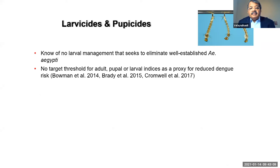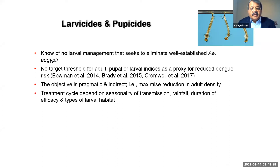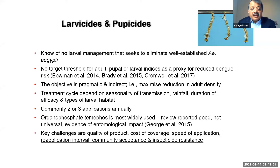For larval control, we must target both larvae and adults for effective dengue control. Larval management is mainly to reduce adult density. The treatment cycle must be planned around transmission patterns, rainfall, and the type of habitat — commonly two to three applications annually depending on slow-release formulations. Organophosphate temephos is widely used for larval control. Key challenges include product quality, cost of coverage, speed of application, application interval, community acceptance, and insecticide resistance monitoring.